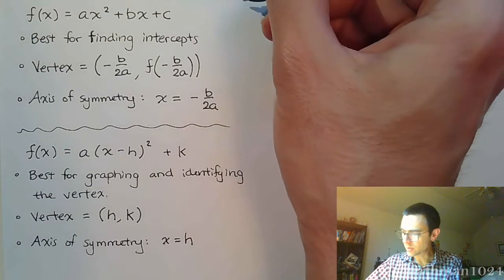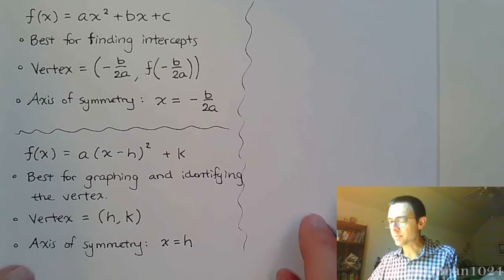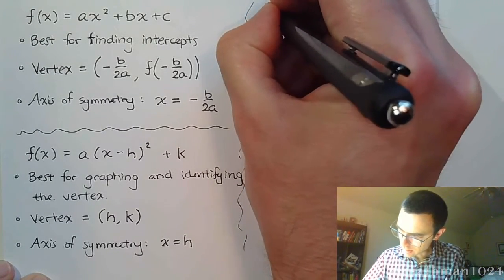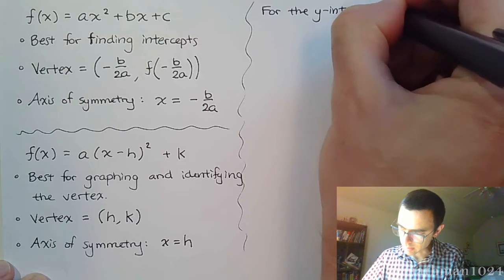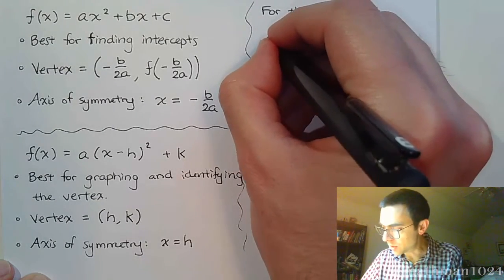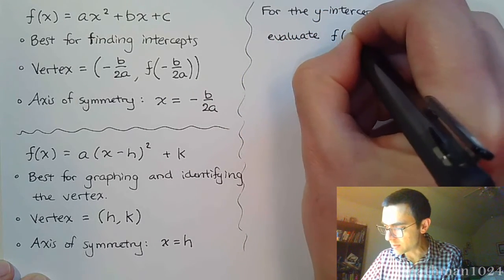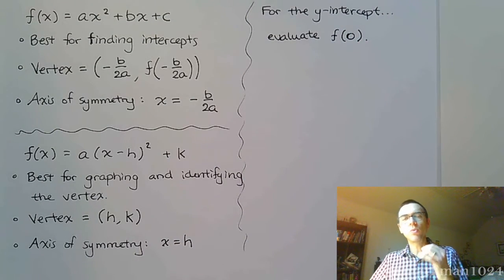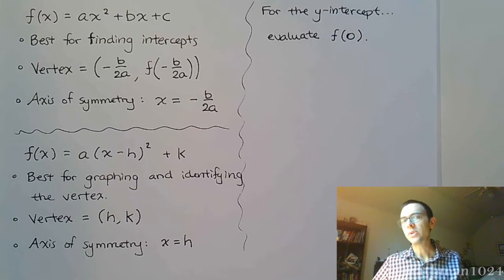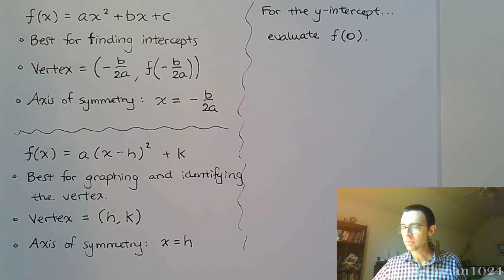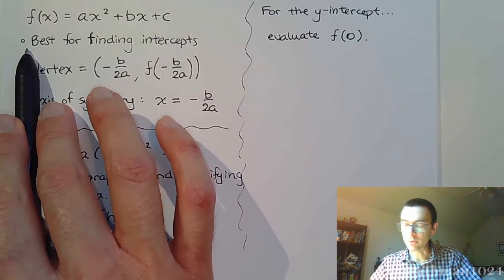So here's some notes that we have here for these guys, but no matter what form you have, let's talk about what we need to do to identify the intercepts. For identifying the y-intercept, all you need to do is evaluate f(0). No matter what kind of function you have, plug in 0, and that's going to help you get the y-intercept. Now the value itself is not the y-intercept because y-intercepts are supposed to be ordered pairs. So I want you to see how that is useful for this first form. I said this standard form or general form is best for finding intercepts.